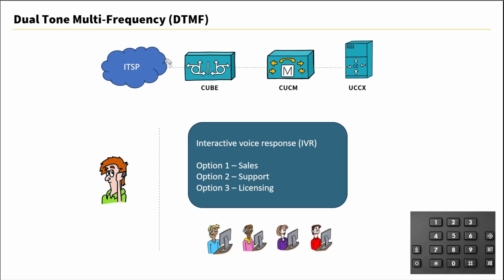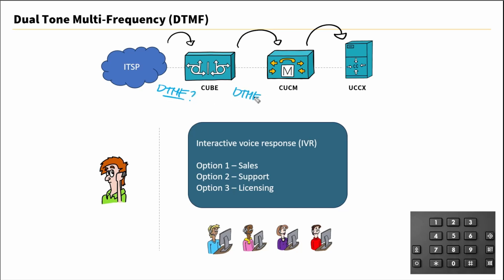Take an example here where I have an ITSP connection — maybe it's a SIP trunk — that goes to my Cube. From Cube, it goes over to CUCM. Then from CUCM, maybe I have a Contact Center Express cluster that is home to the IVR that customers reach. With each leg of this Voice over IP network, we have to account for how DTMF will be used. Having an issue with DTMF at any point in this call flow could potentially cause an issue for customers where they are unable to choose an option off the IVR.